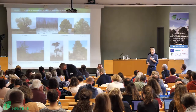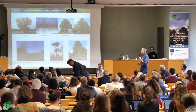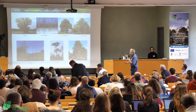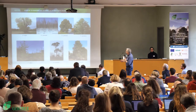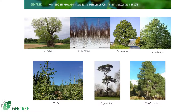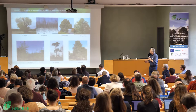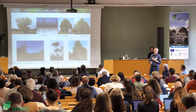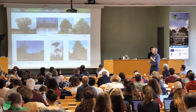To do that, we have seven species: Populus nigra, Betula pendula, Quercus petraea, Fagus sylvatica, Picea abies, Pinus pinaster, and Pinus sylvestris — four broadleaves and three conifers.